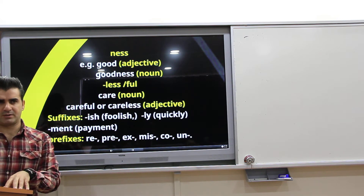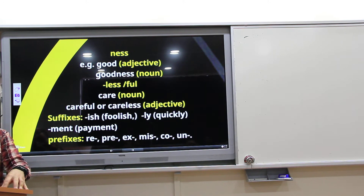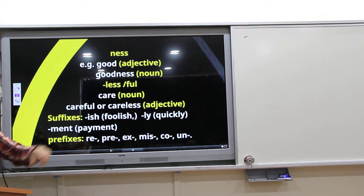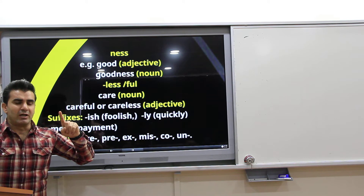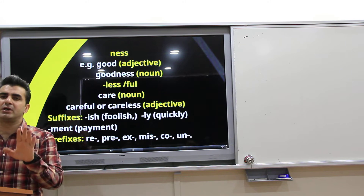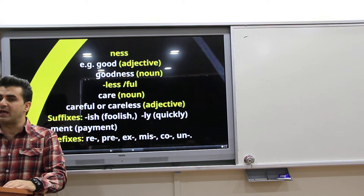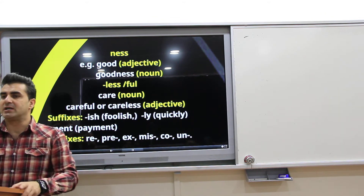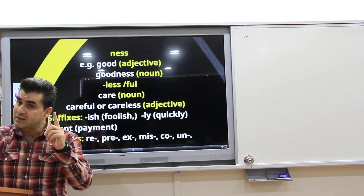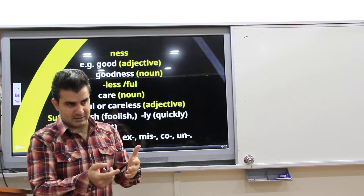Is it a bound morpheme? Yes. Why is it bound? Because it cannot be used on its own — it cannot stand alone. It is bound, but does it change the category of the word it is attached to? Yes. For example, 'good' is an adjective, but when you add '-ness' to the end and say 'goodness,' it is no longer an adjective — it is a noun. Did it change the grammatical category? Yes.